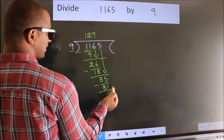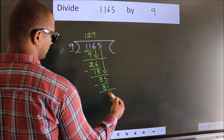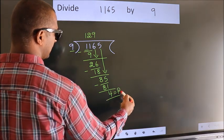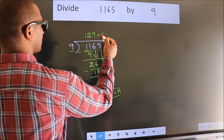No more numbers to bring down, so we stop here. This is our remainder. This is our quotient.